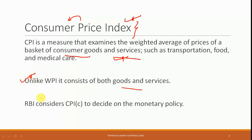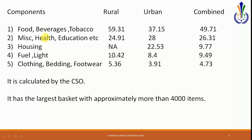The RBI considers the Consumer Price Index Combined to decide monetary policy. CPI is of different types: CPI for industrial workers, rural workers, agricultural labor, and urban areas. The CPI Combined is what the RBI uses to decide about monetary policy.